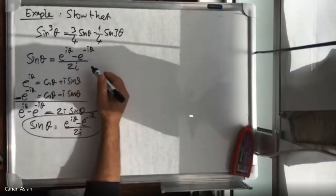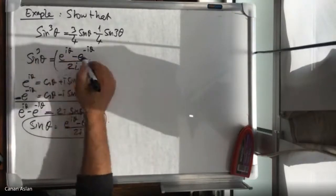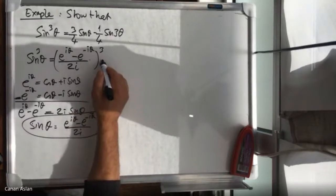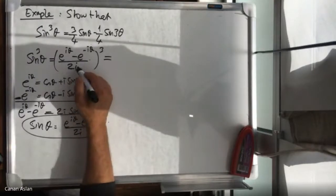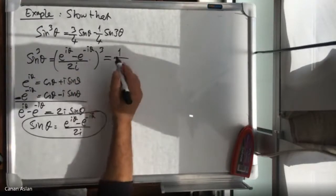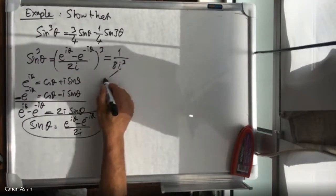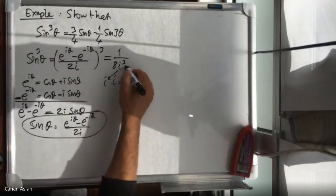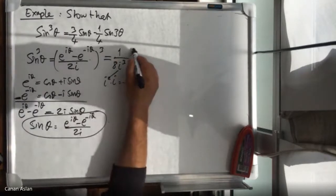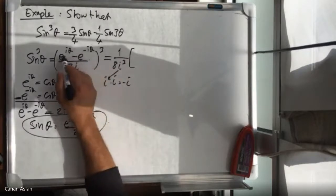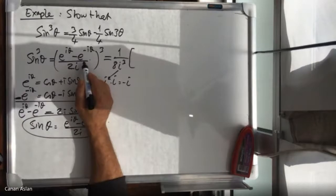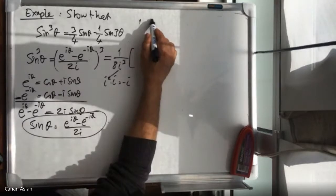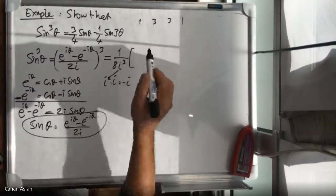Now sine cubed theta is just the cube of this expression. The cube of the denominator is eight i cubed. Since i squared is minus one, i cubed equals minus i, so the denominator is minus eight i. For the numerator, we take the cube of the top using Pascal's triangle — the coefficients for a cube expansion are one, three, three, one.